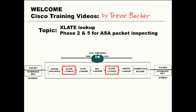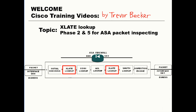Xlate Lookup is the second and fifth phase of the packet inspection process Cisco ASAs perform on incoming packets. Before we go into why Xlate is inspected in two different phases, let's first define exactly what Xlate Lookup is. The ASA firewall maintains a translation table for every protected host on the protected network that can participate in connections. This translation table is also called an Xlate table.